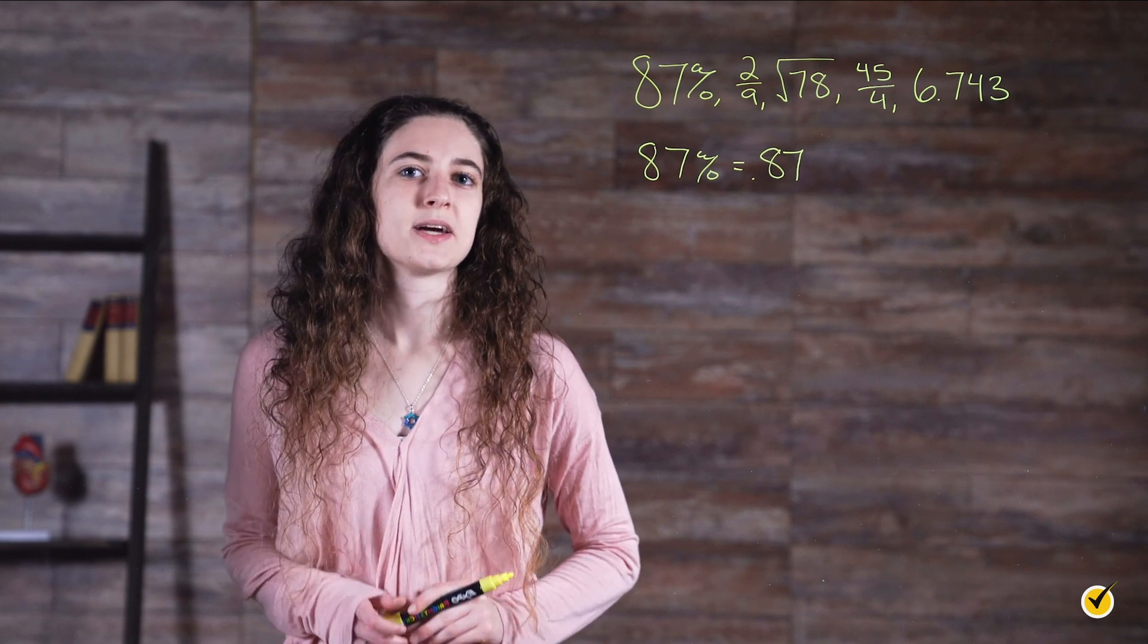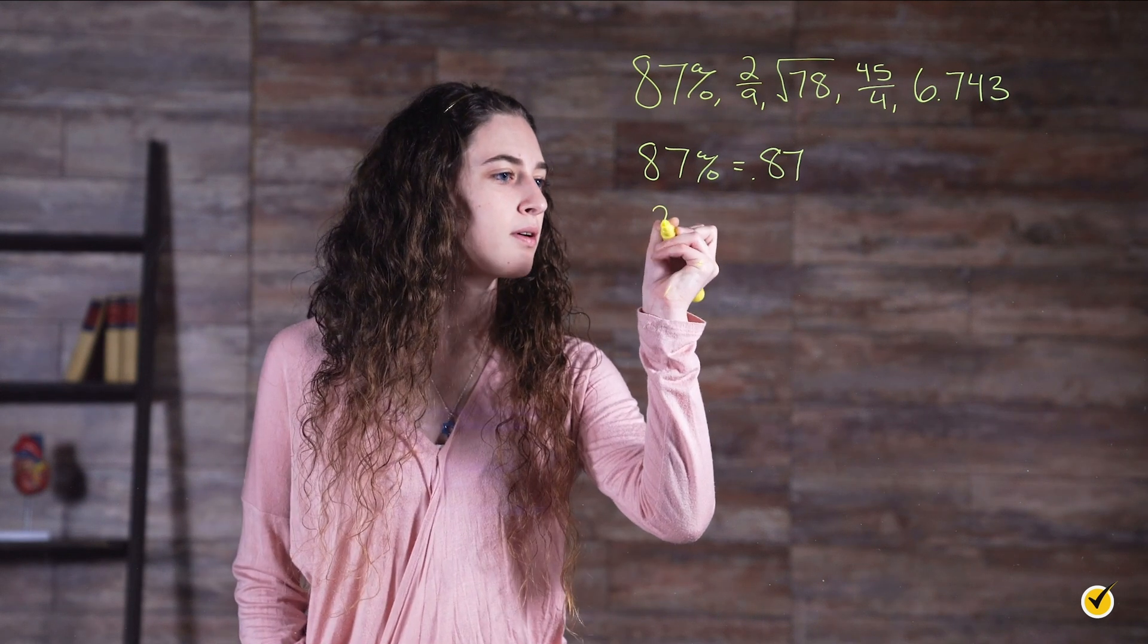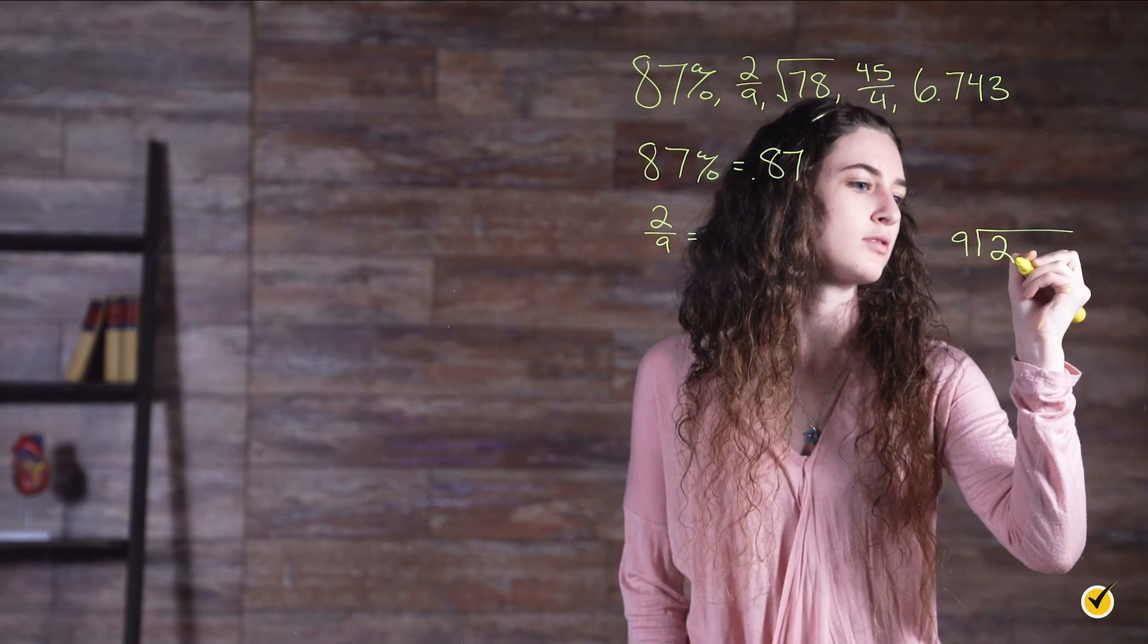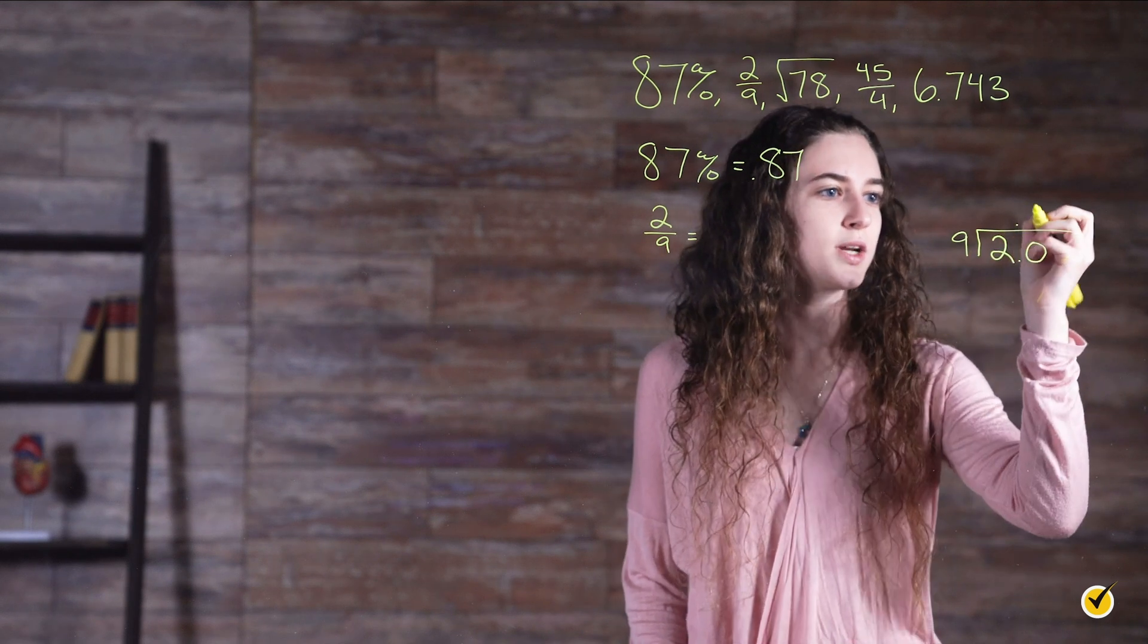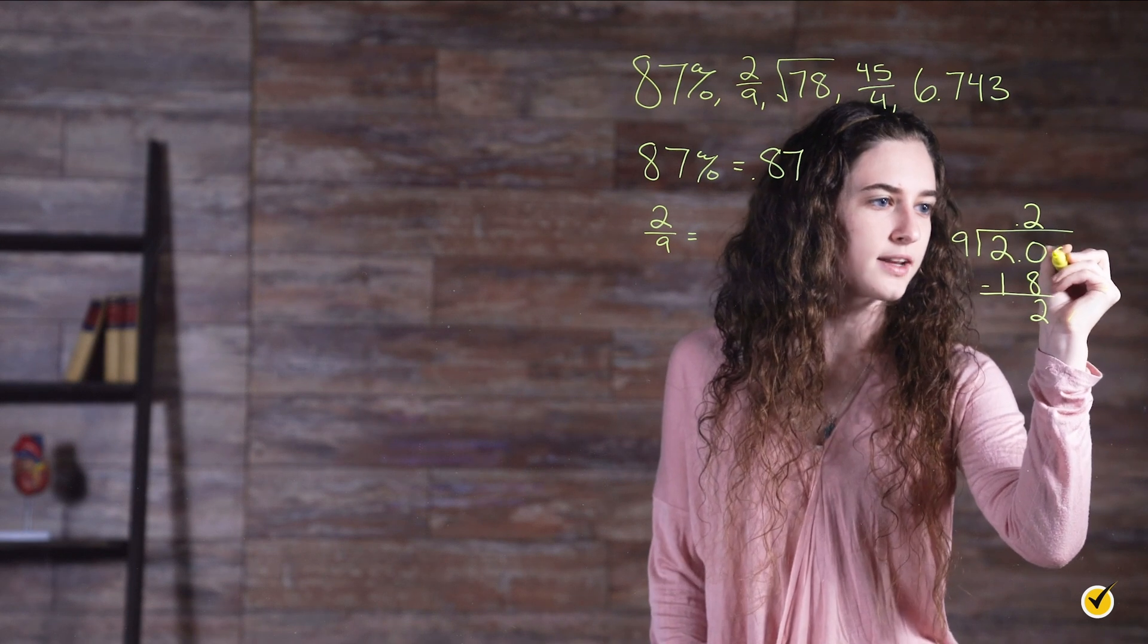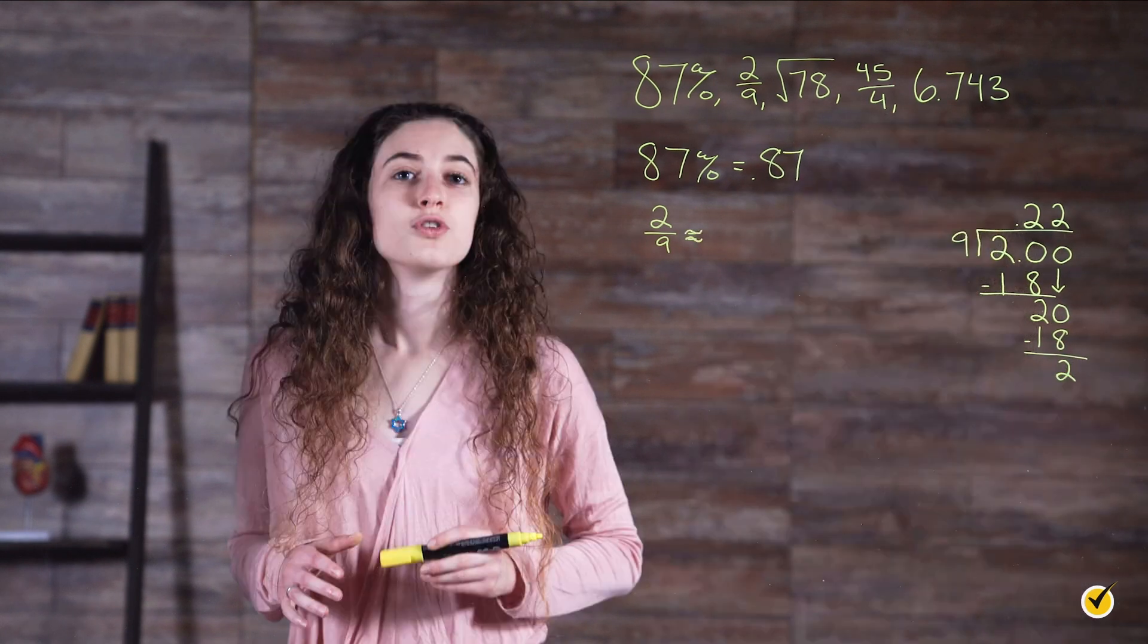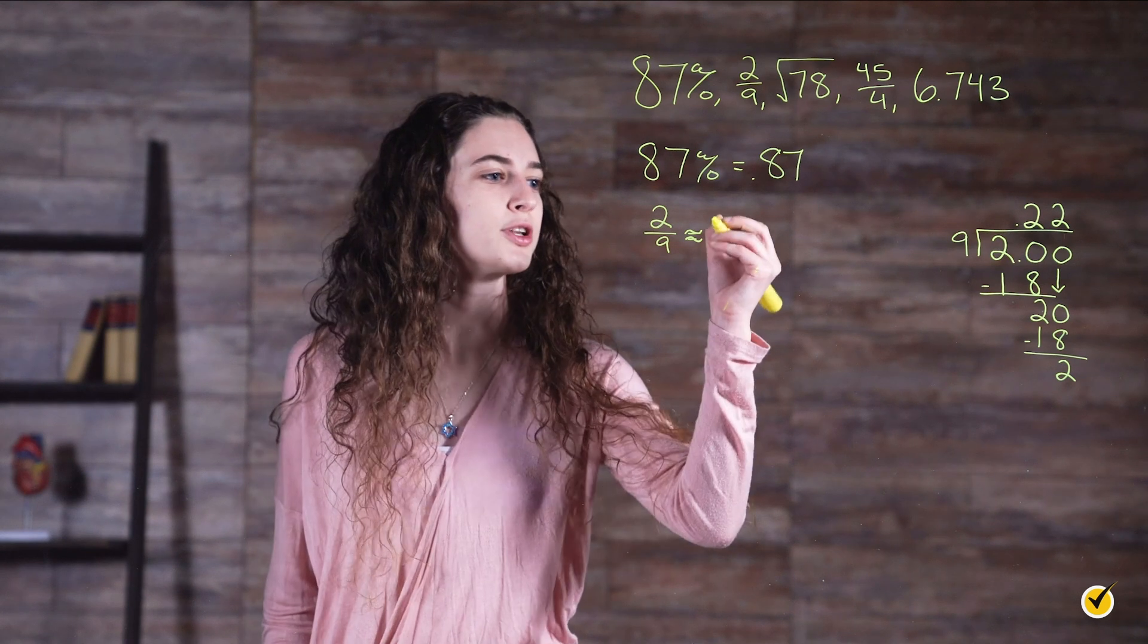We can figure out what two-ninths is by dividing two by nine. Remember, a fraction bar always means divide. So two divided by nine, nine goes into two zero times. So we add a decimal and put a zero, putting the decimal up here also. Nine goes into twenty two times. Nine times two is eighteen, and then we subtract and get two. If we add a zero and bring it down, we get twenty. Nine goes into twenty two times, we get eighteen, subtract, and we get two. Notice that when we divide, we get 0.2 repeating. So for this exercise, we will round to 0.222.